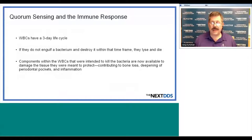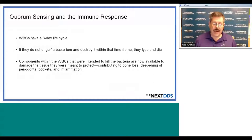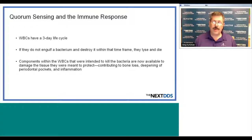Via quorum sensing, bacteria can confuse defending white blood cells chemotactically by releasing chemicals into the local environment, rendering the immune response ineffective. White blood cells have a three-day life cycle, and if they do not engulf and destroy a bacterium within that timeframe, those cells lyse and die. Components within the white blood cells intended to kill bacteria are then available to damage the tissue they were meant to protect, contributing to bone loss, deepening of periodontal pockets, and more inflammation.